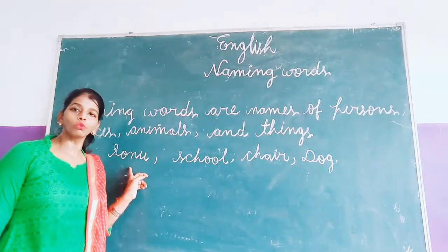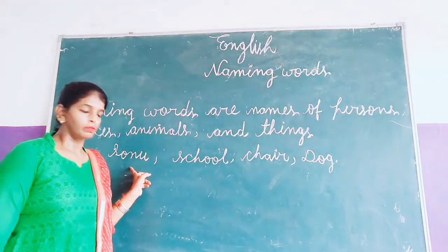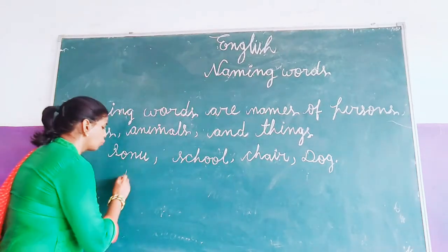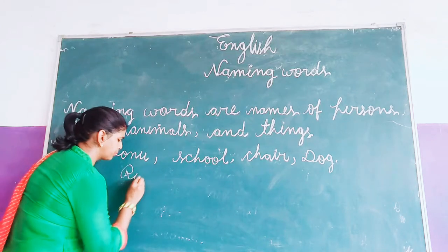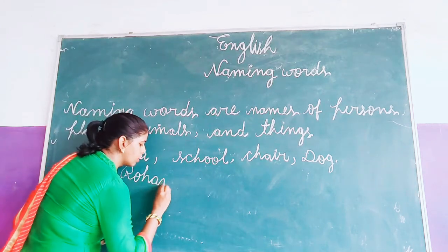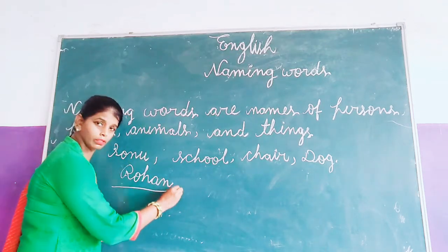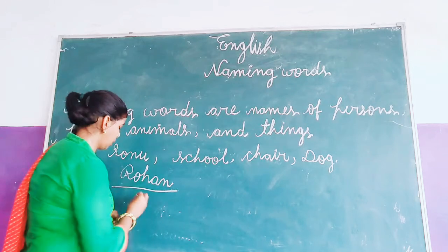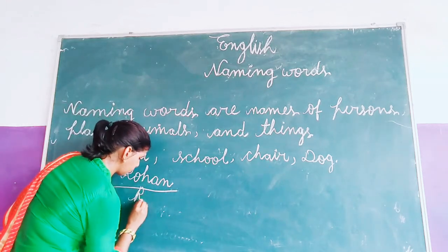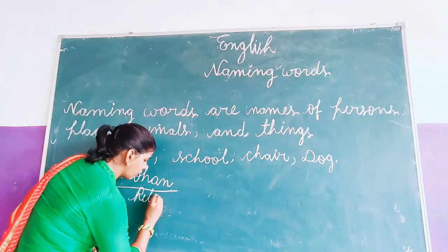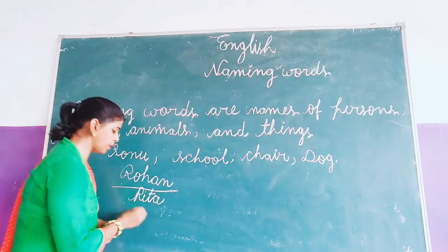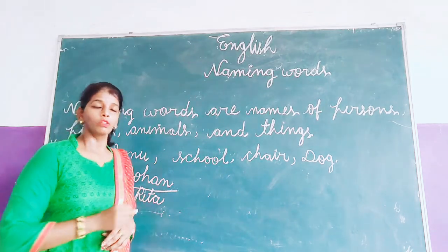This person's name is Sonu. Like I have Sonu, Rohan. This person's name is Rika. So Rika is a girl's name. These are all person names, so we call them naming words.